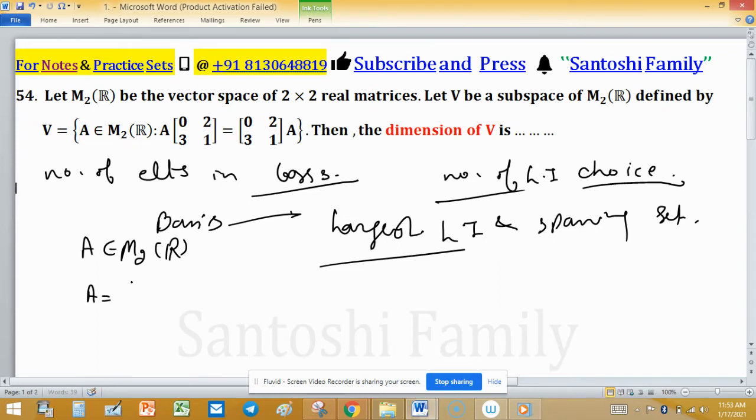Consider a matrix A defined as [a, b; c, d], this is of size 2 × 2. And this matrix is multiplied by [0, 2; 3, 1] equals... This equality means equality of two matrices [0, 2; 3, 1], and A is [a, b; c, d].